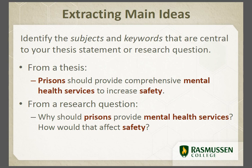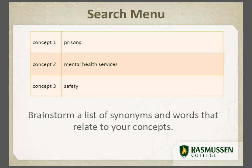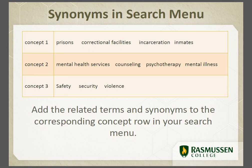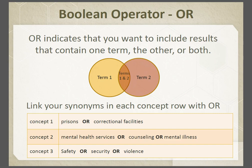Start your search string by identifying the subjects and keywords that are central to your thesis statement or research question. In our example thesis, the words prisons, mental health services, and safety are the key concepts to focus on. Put these key concepts into a search menu to help you visualize your process. Then brainstorm a list of synonyms and words that relate to each concept and add them to the corresponding concept row in your search menu.